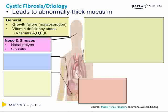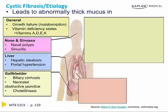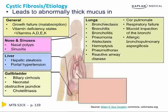In the nose and sinuses, patients with CF often develop nasal polyps and sinusitis — the thick mucus is a setup for infectious bacterial sinusitis. In the liver, there is evidence of hepatic steatosis and, in the worst case, portal hypertension. In the gallbladder, biliary cirrhosis, neonatal obstructive jaundice, and cholelithiasis can occur. The organ most commonly and most severely affected is the lung.